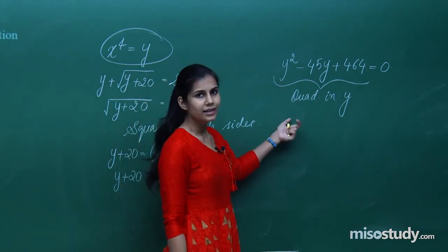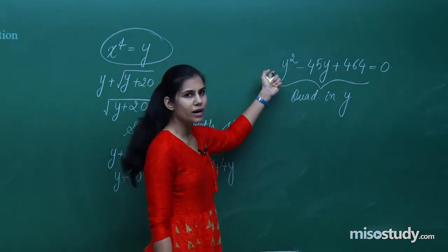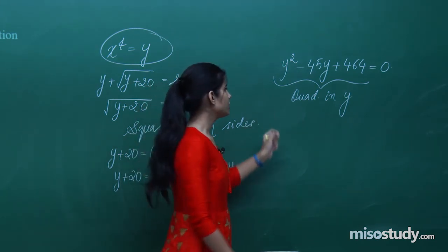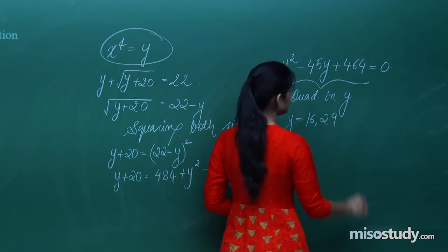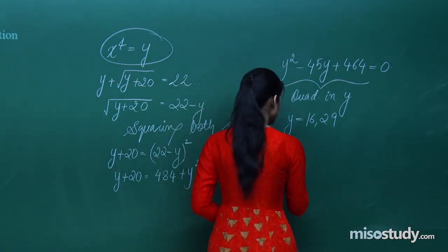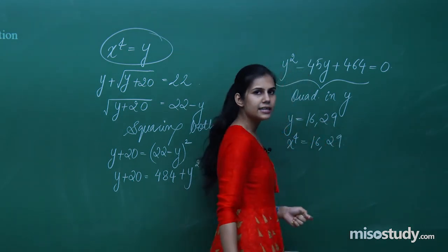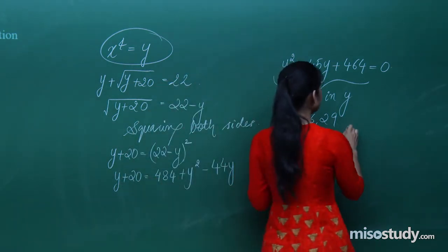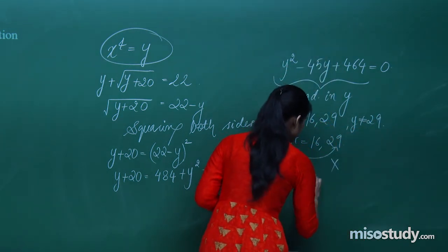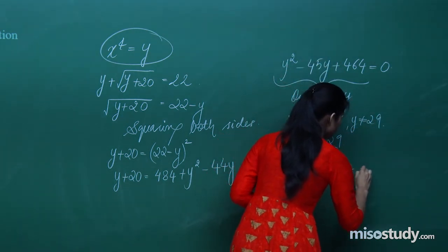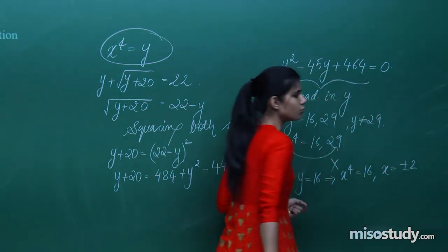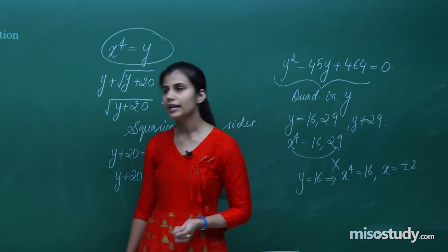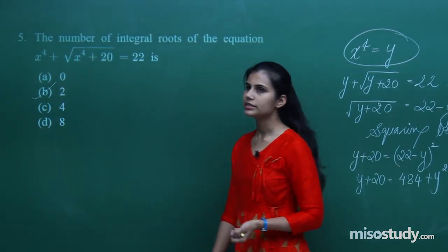Applying the quadratic formula gives y = 16 and y = 29. Since y = x⁴, we check: is there any real x for which x⁴ = 29? No. So y = 29 is rejected. For y = 16: x⁴ = 16 gives x = ±2. Therefore x can take two values, +2 and -2, both integral roots.